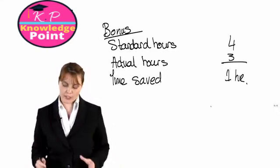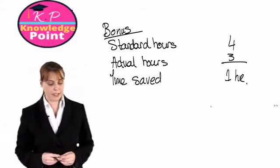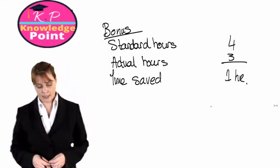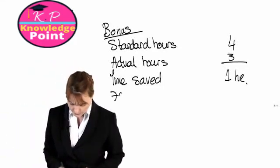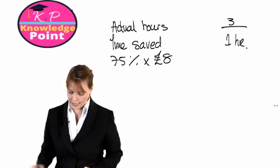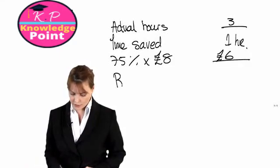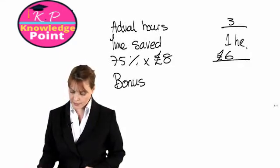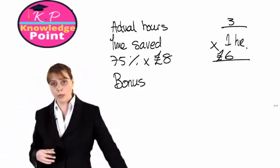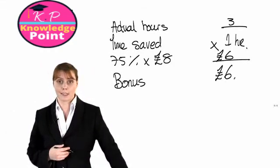Then we have been told in the question that for each hour saved, this person is going to get paid 75% of their basic rate. So they will get paid 75% of £8, which is £6. So their bonus is the number of hours saved multiplied by the bonus for each of those hours. So their total bonus is £6.